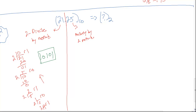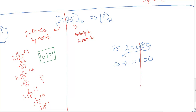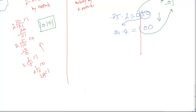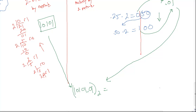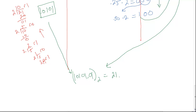Now we do the multiply by 2 method for the 0.25. We take 0.25, multiply by 2, and end up with 0.50. We ignore the left side of the Radix point and take only the fractional value. Multiply 0.50 by 2, and we end up with 1.0. Now that everything left of the Radix point is 0, we're done. We read downward and end up with 0.01. Now we combine the two parts: 10101 from the whole part and .01 from the fractional part gives us 10101.01 in base 2, which equals 21.25 in base 10.